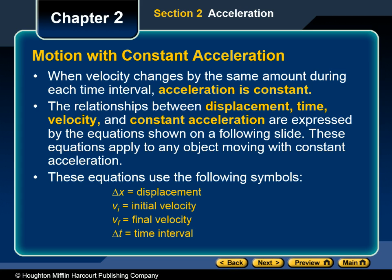When velocity changes by the same amount during each time interval, acceleration is constant. The relationships between displacement, time, velocity, and constant acceleration are expressed by equations shown on the following slides. These equations apply to any object moving with constant acceleration. The following equations will use these symbols: delta x equals displacement, V sub i equals initial velocity, V sub f equals final velocity, and delta t equals time interval.